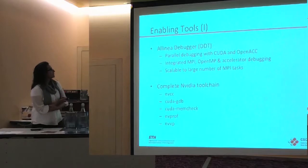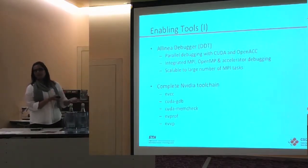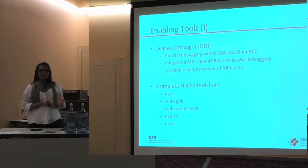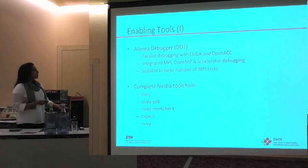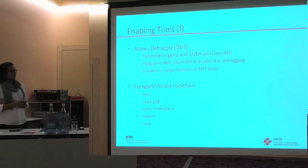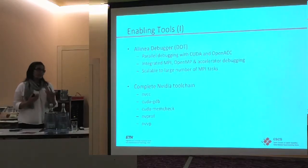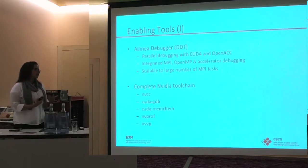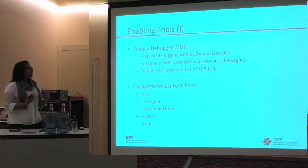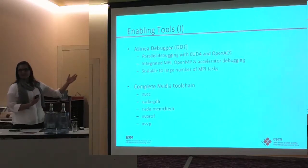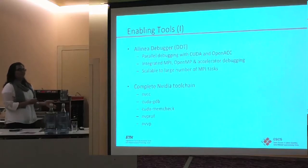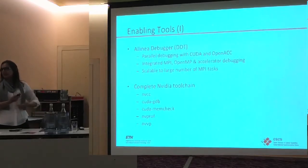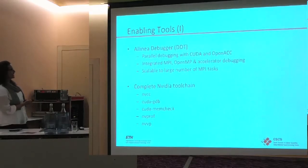Shifting gear to what I call enabling tools — this is everything: debugger, performance measurement and analysis, any tool or utility that once you are on the system helps you figure out if your code is breaking or not performing as it should. For this machine, we made sure the tools you are used to on a multicore environment are there and well supported. Plus these new environments coming in — I've mentioned CUDA and OpenACC, because tool support around OpenCL is really limited. If Allinea comes out and says they have OpenCL support, it will be on our system.